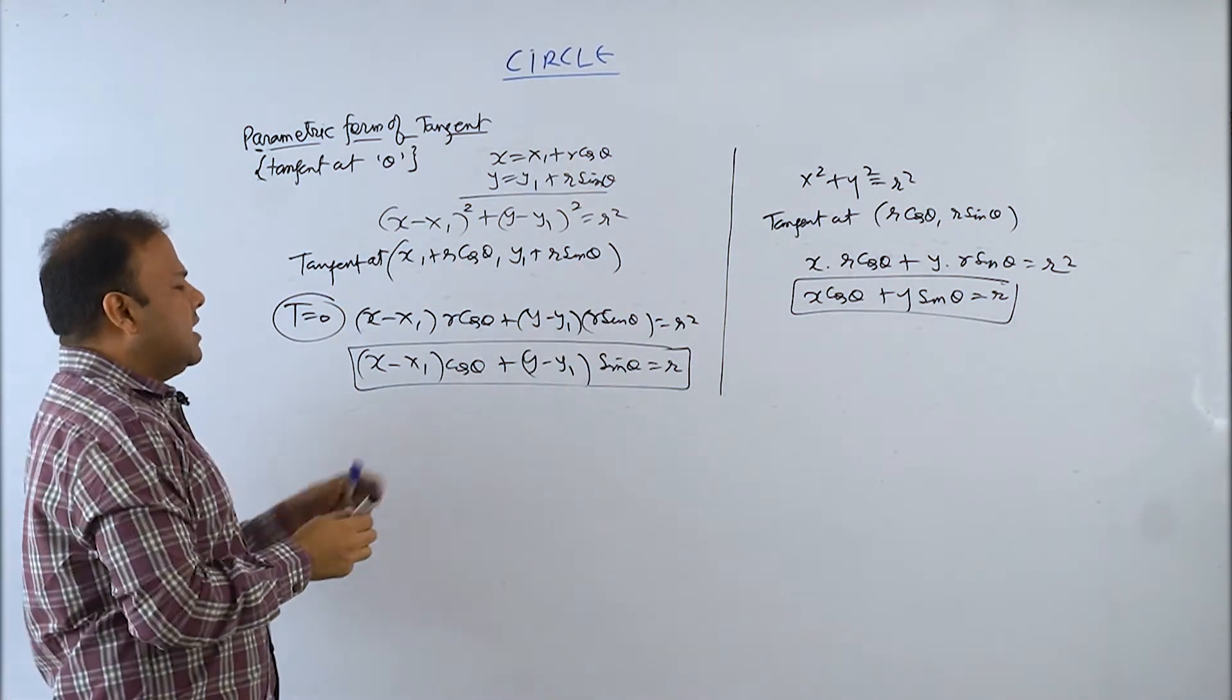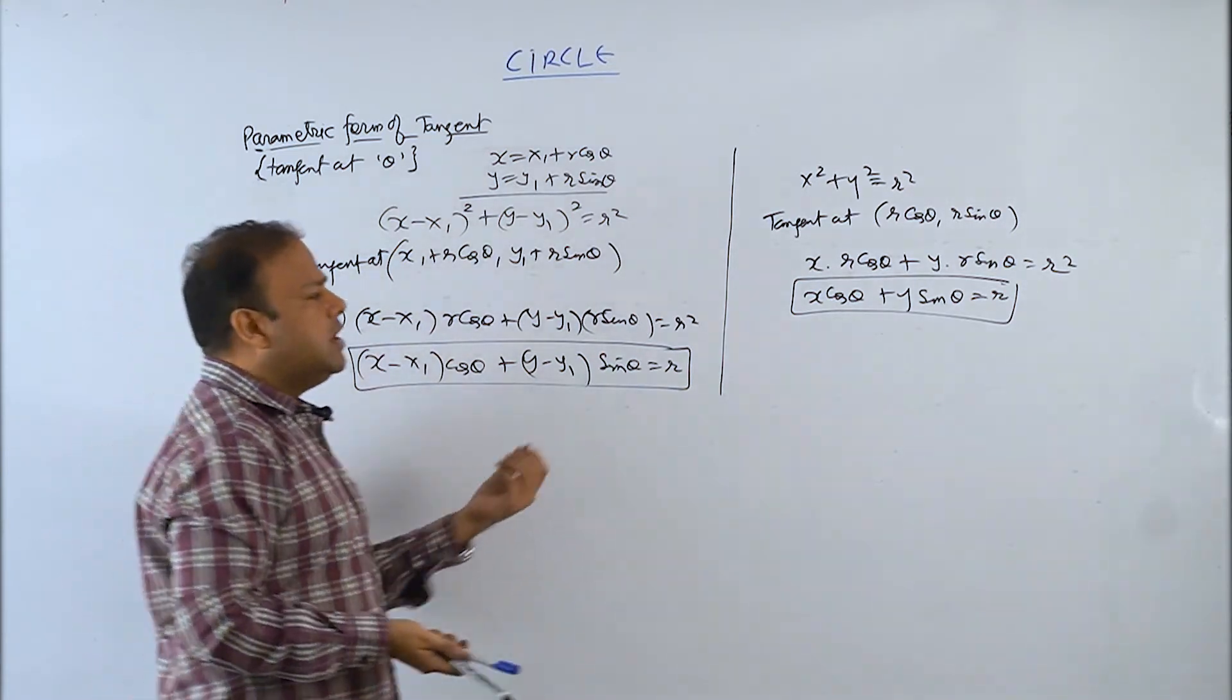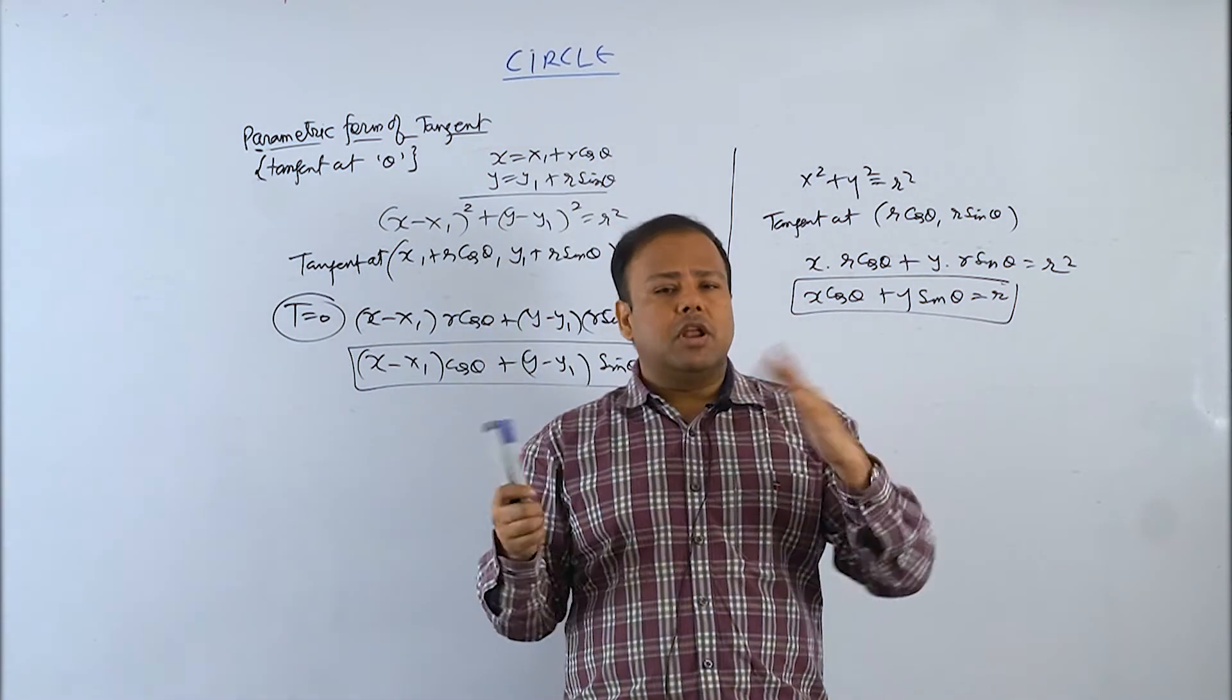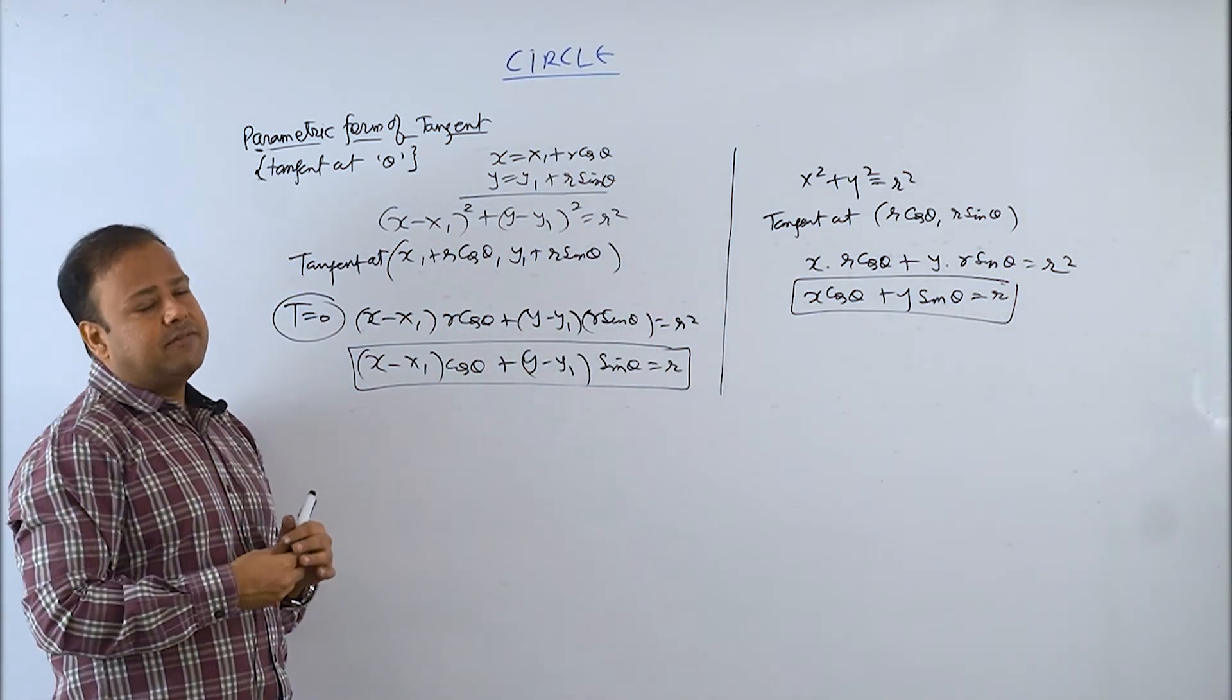That is for standard and this is for any circle whose center is x1, y1. Standard or any circle, the only difference is the center. Radius is given everywhere.